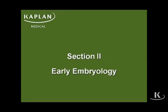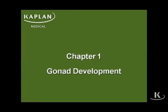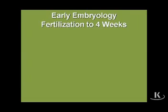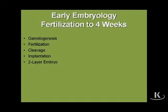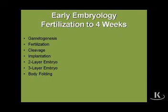Let us begin our discussion looking at early embryology, starting with the development of the gonad. We will cover first the process of gametogenesis — how gametes are formed — and then fertilization, how the sperm and ovum join. Then the process of cell division during the first several days of development, called cleavage division, followed by implantation of the embryo into the uterine wall. Then we will talk about how that embryo forms into a two-layered embryo, subsequently transforms into a three-layered embryo, and finally the body folding to develop the adult body structure.